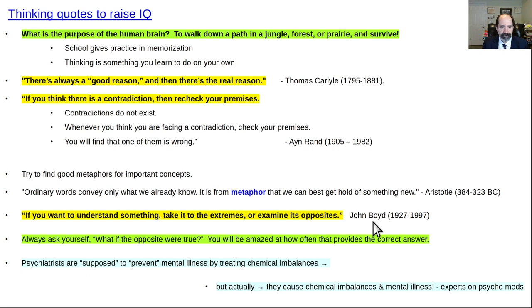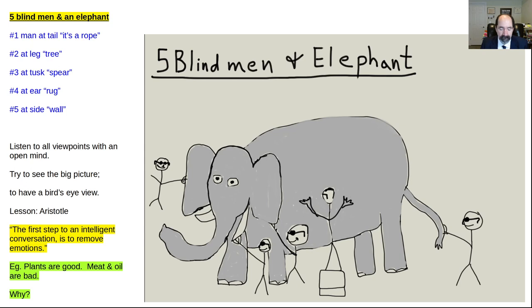You have to either be watching intellectual videos or having intellectual conversations or taking classes, reading books. You gotta do something to keep your mind active or you progressively become dumber. You either keep getting a little more knowledgeable or you keep getting a little dumber. You don't stay in the same spot. Oh, this is one quote. Psychiatrists are supposed to prevent mental illness by treating chemical imbalances. Instead, they actually cause chemical imbalances and mental illnesses. That's a lot of psychiatric experts have said that. So that's an example of the opposite of what something is supposed to be is what that is.